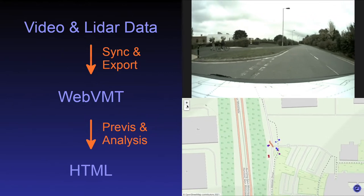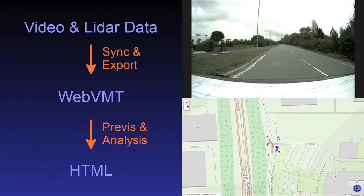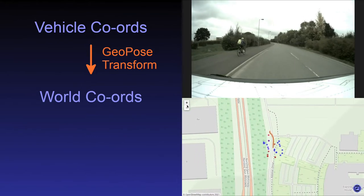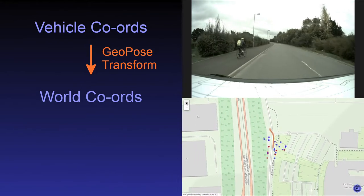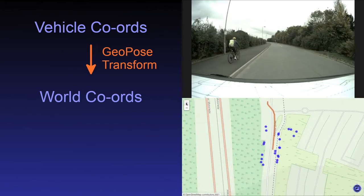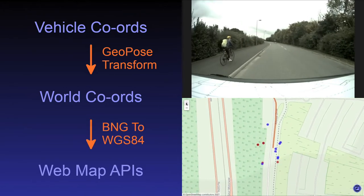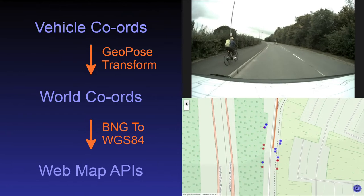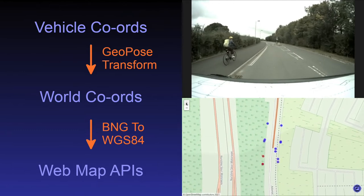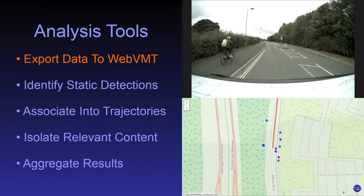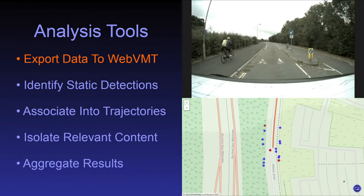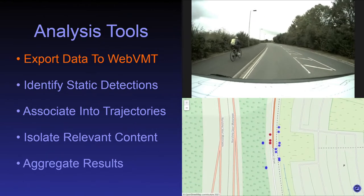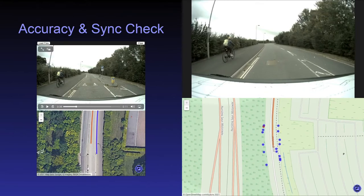Detections were transformed from the vehicle's frame of reference into world coordinates using synchronised geoposed data. Coordinates were converted from British National Grid in metres to WGS84 in degrees for WebMap API compatibility. Data from multiple sensors were synchronised with video and exported to a single WebVMT file for analysis.